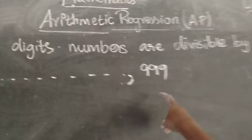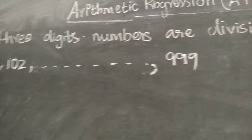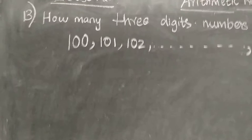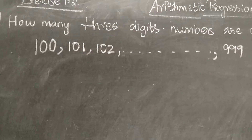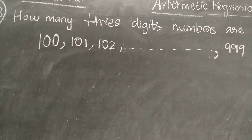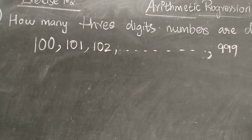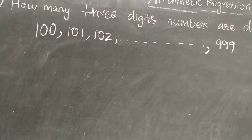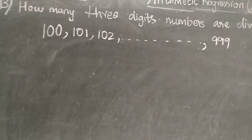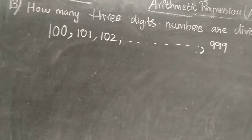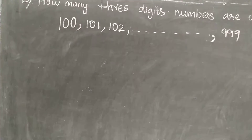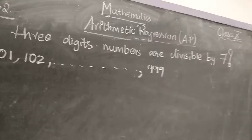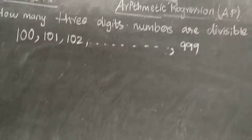So 3-digit numbers start from 100, then 101, then 102, and so on till 999. This is the last 3-digit number. So 100 is the first 3-digit number and 999 is the last 3-digit number. Among the numbers from 100 to 999, we have to check how many 3-digit numbers are divisible by 7.